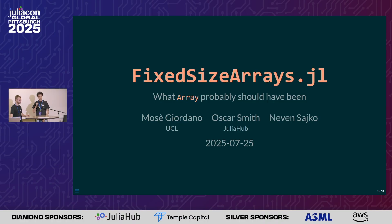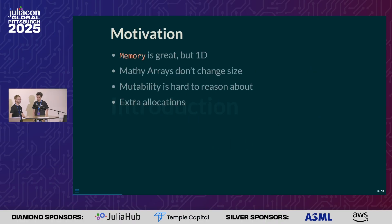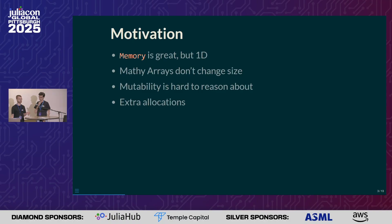This is a new package that implements an array that has a runtime fixed size, but is still mutable. In terms of why we did this, in 1.11, Jameson and I gave a talk on the new memory type. And memory is really good, but it's only a 1D collection.